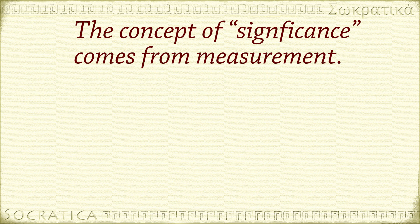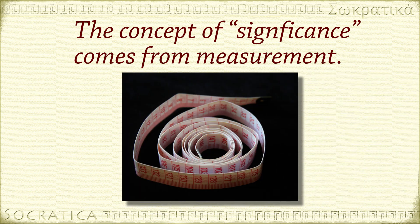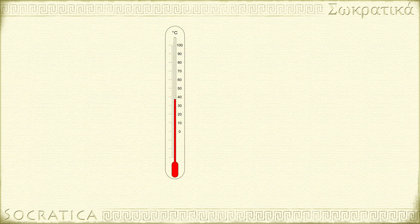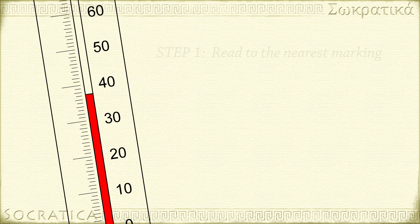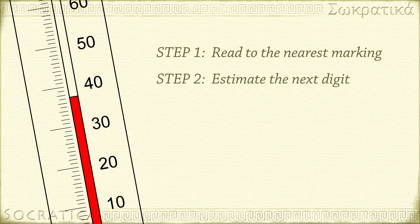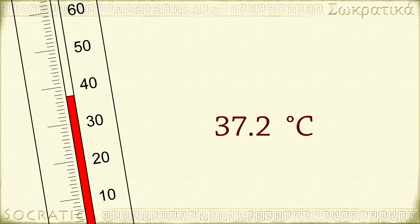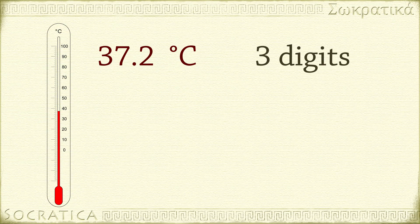Where did these ideas of significance come from? From measurement. If you have a thermometer with each degree marked, you can easily read it to the nearest degree, but you can also estimate the next digit. We're estimating the temperature to the nearest tenth of a degree. Here, it's between 37 and 38. I would read this as about 37.2 degrees Celsius. This estimated temperature has three digits — the first two are known with certainty, while the last digit has been estimated, and so it has some uncertainty.